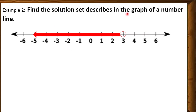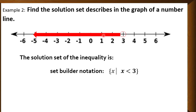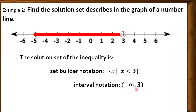Example number 2. Find the solution set described in the graph of a number line. We have here an open circle at 3, then going to the left are the solutions of this inequality. Using set builder notation, that is the set of all x such that x is less than 3. Numbers going there are less than 3. For the interval notation, going there is negative infinity — for infinity we use parenthesis — so negative infinity, then 3. Since 3 is not included, we have up to 2.9 as part of the solution but excluding 3, so we use a closed parenthesis.